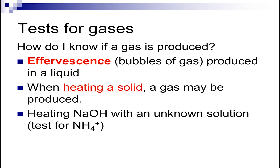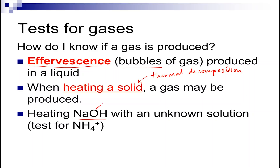How do I know if a gas is produced? There are three ways to know if a gas is produced. Most of the time, effervescence or bubbles will be formed. What happens when there are no bubbles of effervescence? Usually that happens when you decompose the solid — this is thermal decomposition, which you will do in semester two.